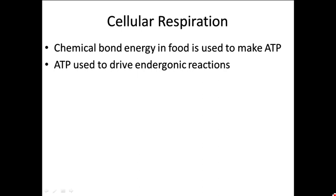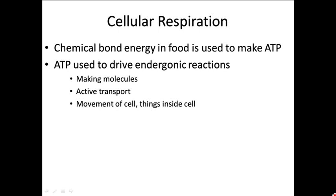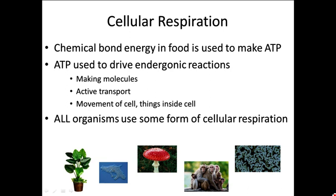ATP is used to drive or fund endergonic reactions in the cell. What kind of things do you need ATP for? Things like making new molecules to make new cells, doing active transport to create and maintain concentration gradients required for cell function, moving a cell, moving things inside a cell, and many other things. ATP is a super important molecule central to all organisms. All organisms have to use some form of cellular respiration to get energy out of food — whether they make it as autotrophs or eat it as heterotrophs — in order to get ATP.